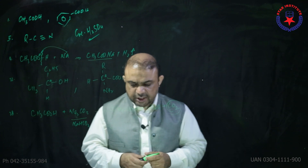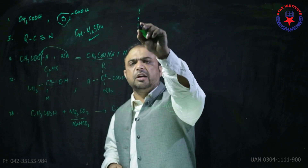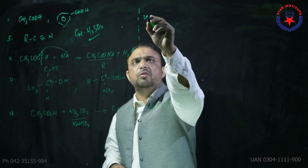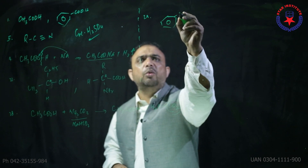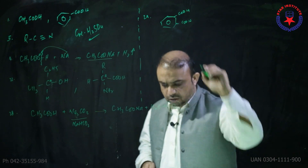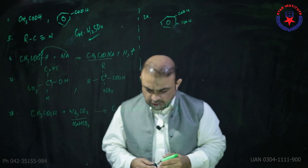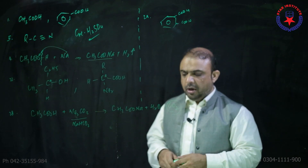Question number 29: Which of the following is a closed-type organic acid? Phthalic acid, because its formula shows a ring structure — it is closed. Choice charlie. Question number 30: Acetamide is prepared by heating ammonium acetate — as just discussed.